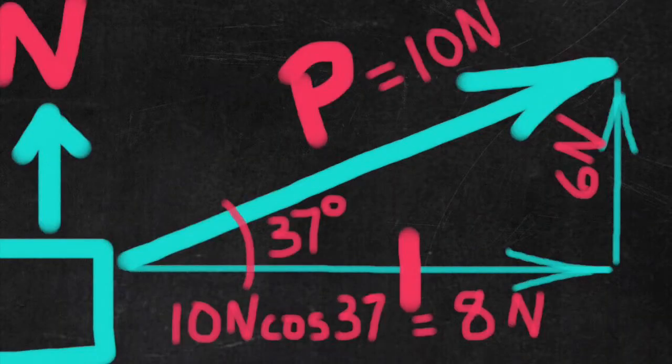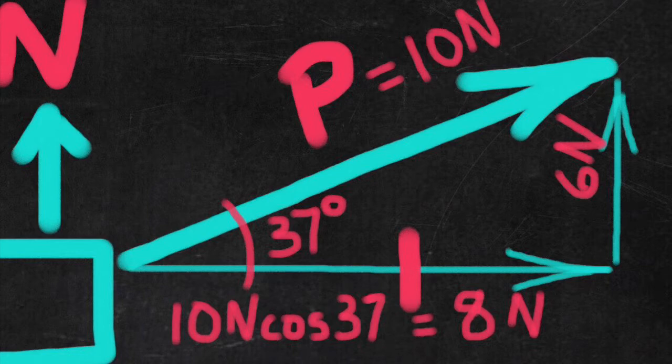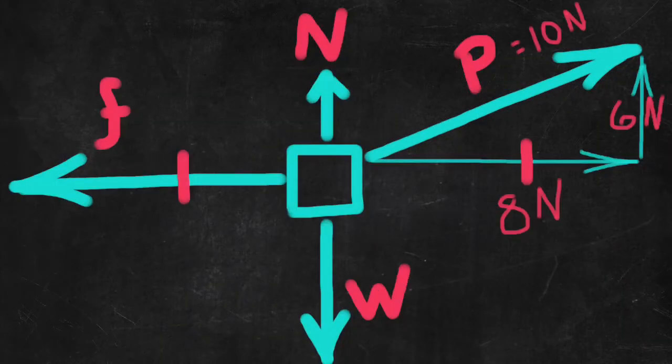Imagining a hypotenuse of 10 newtons and an angle of 37 degrees. 10 cosine 37 degrees gives you the x component. And that's the one we want. Y component. Same process with sine of 6 newtons. Yeah, I'm making up numbers here. 20 newtons down. 14 up plus 6 up. They balance. 8 newtons forward. 8 newtons back.